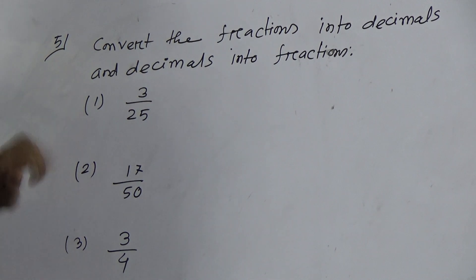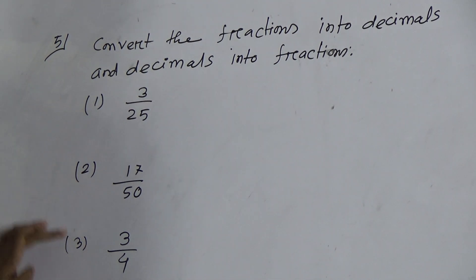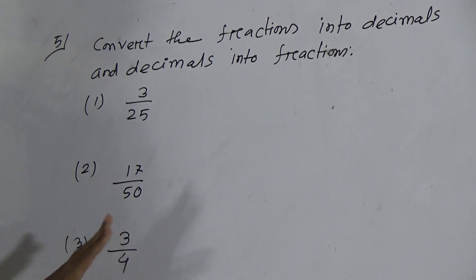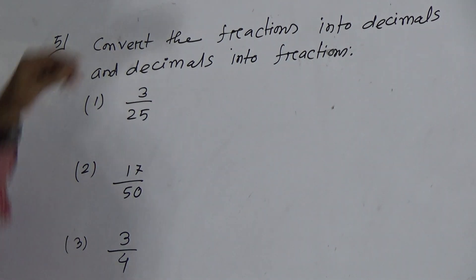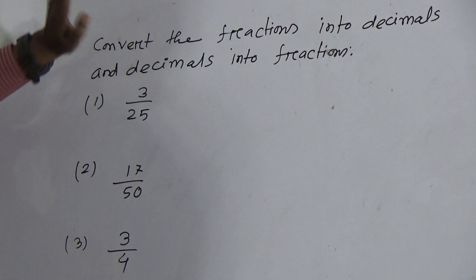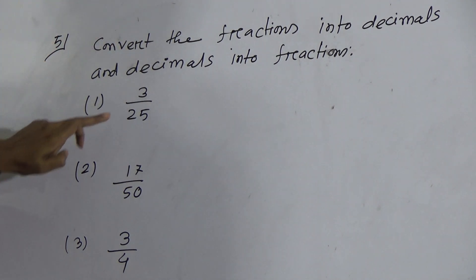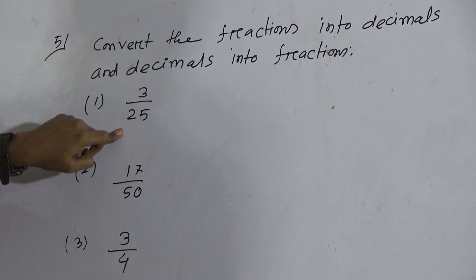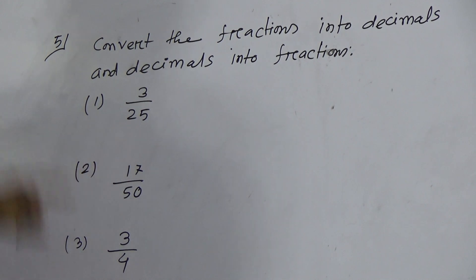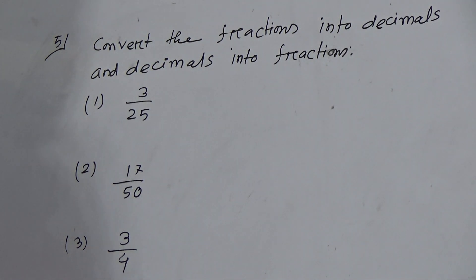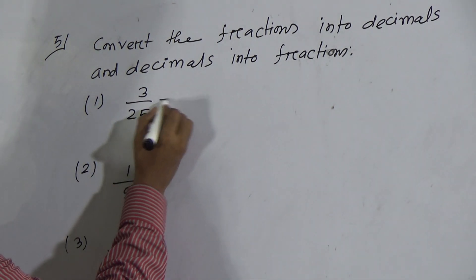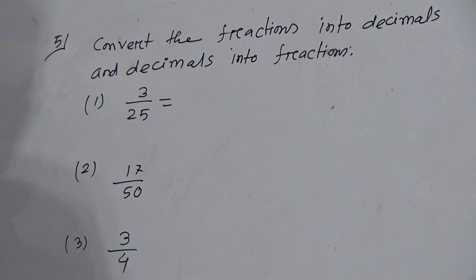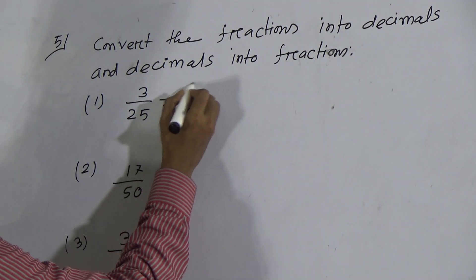According to the questions, you have to convert fractions into decimals — for example, 3 by 4 is a fraction so you convert it into decimals, and 0.6 is a decimal so you convert it into a fraction. Now look, this is 3 by 25, so we have to convert this into decimals.